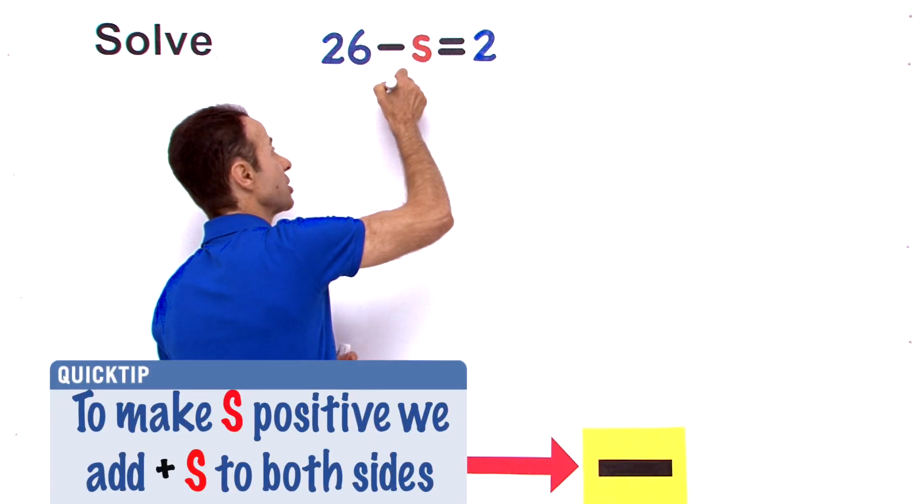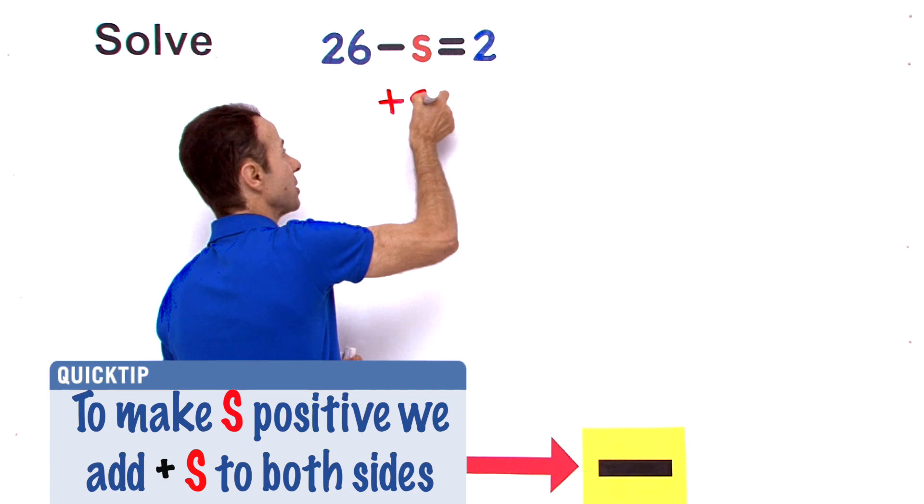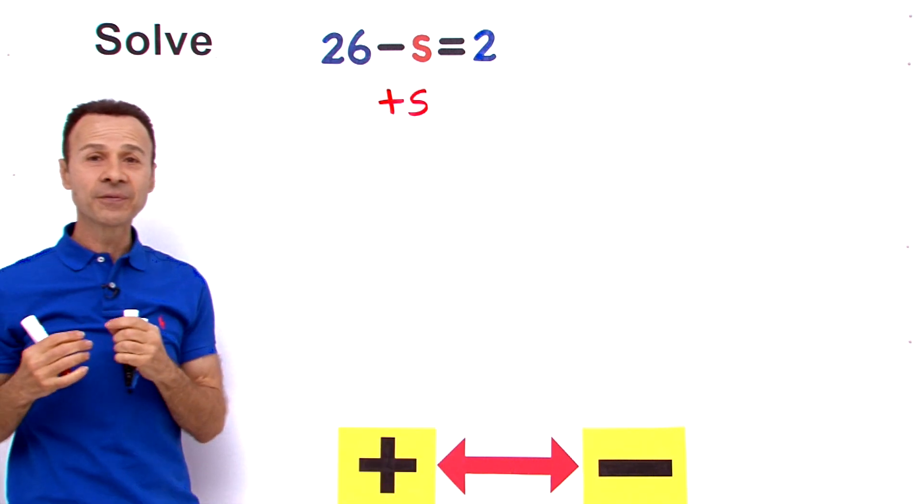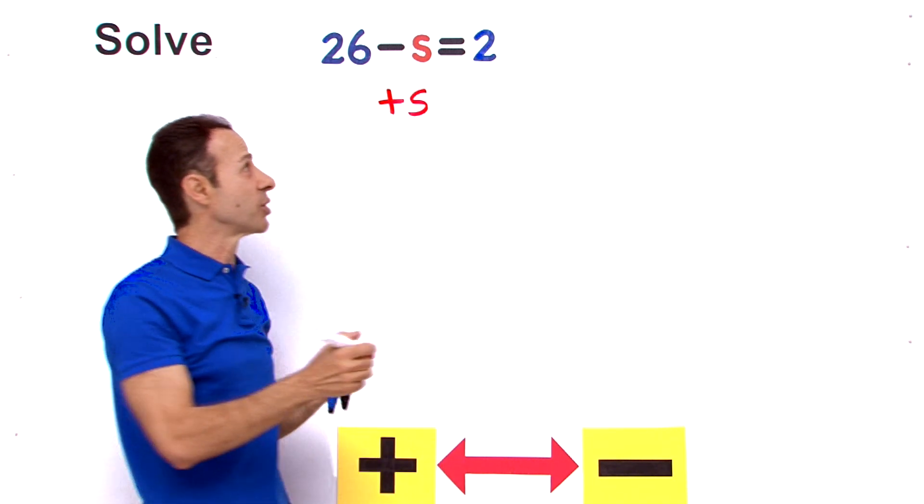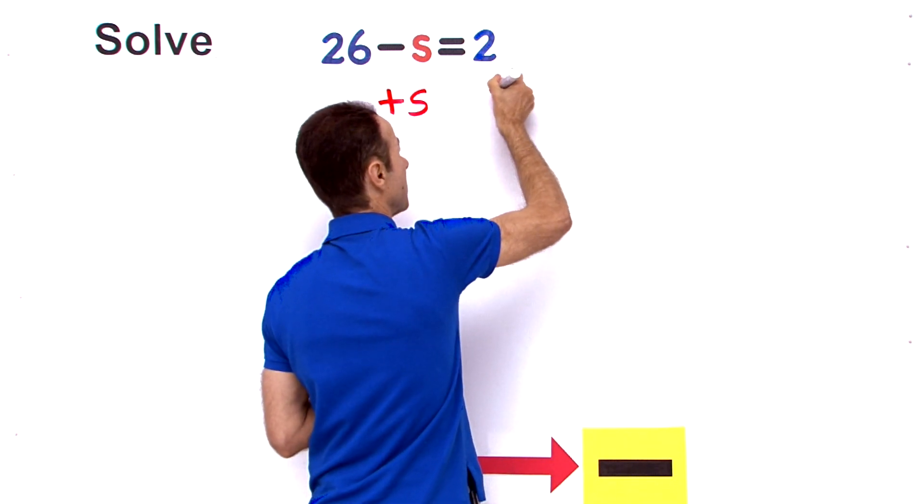So minus s opposite is plus s and if I plus s on the left hand side we also do the same on the right hand side. Plus s.